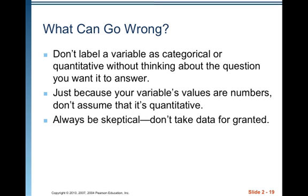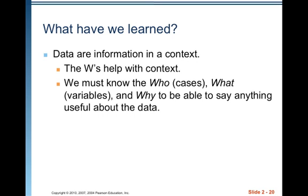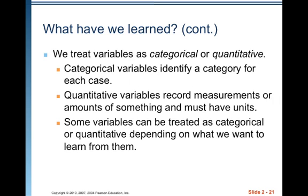Always be skeptical. Don't take data for granted. Data are information in a context, and the context is huge. The W's help with the context. We must know the who — the cases — the what, the variables, and the why to be able to say anything useful about the data. We treat variables as categorical or quantitative. Categorical variables identify a category for each case. Quantitative variables record measurements or amounts of something and must have units. Some variables can be treated as categorical or quantitative depending on what we want to learn from them.